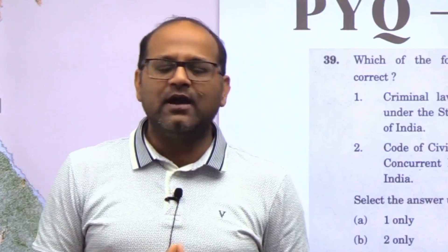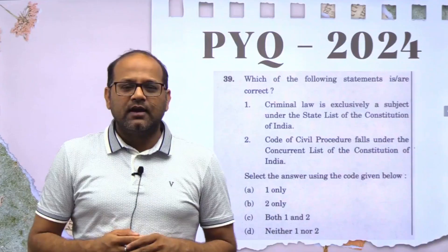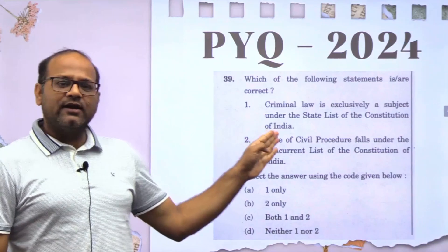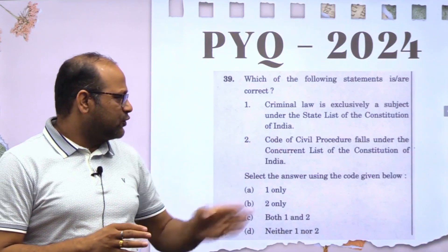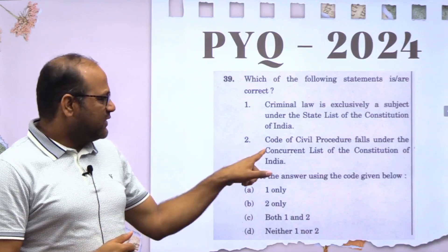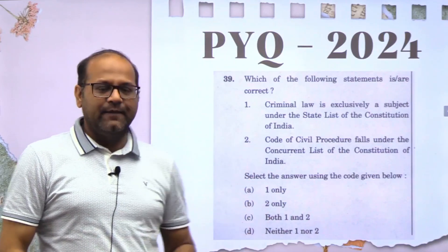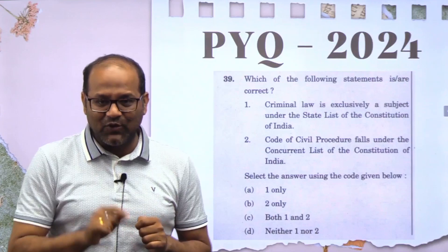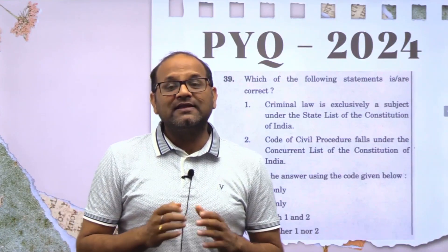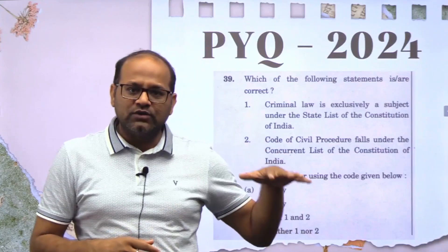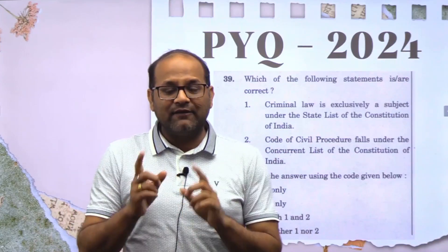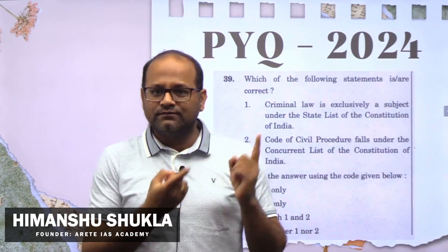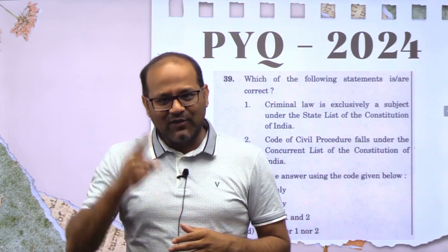So this is how you have to dig deeper. You cannot mug up the whole state list and concurrent list — it becomes difficult. Criminal law is in the concurrent list. Code of Civil Procedure is in the concurrent list. Statement two is correct, statement one is wrong — the answer is B: only two is correct. Now let me know in the comments: where does contempt of court fall — state list or concurrent list? Revise on those lines, think about what kinds of questions UPSC can ask. See you all in the next video.